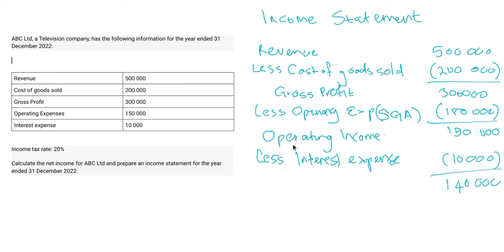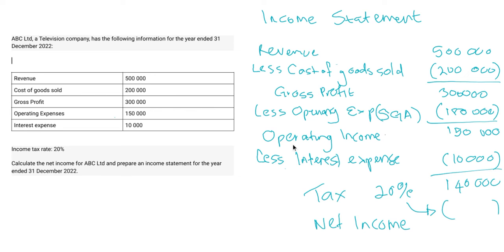Of this $140,000, you have to pay twenty percent in tax. Once you deduct your twenty percent tax, you get your net income. So this $140,000 is your income before tax — your earnings before tax (EBT).